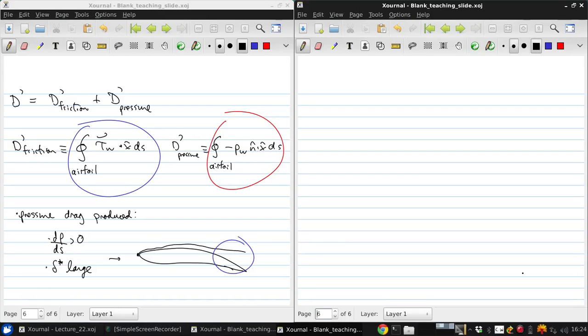Now we can also relate the kinetic energy defect K to the profile drag. To do this, we're going to write P and K in terms of the velocity defect delta U, which is U minus the edge velocity UE.